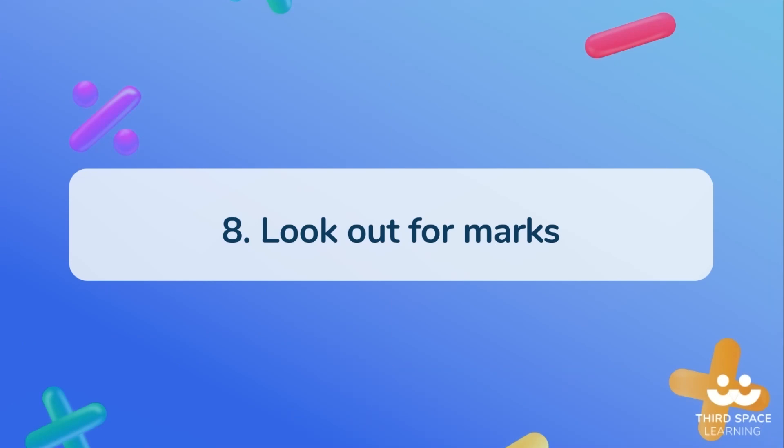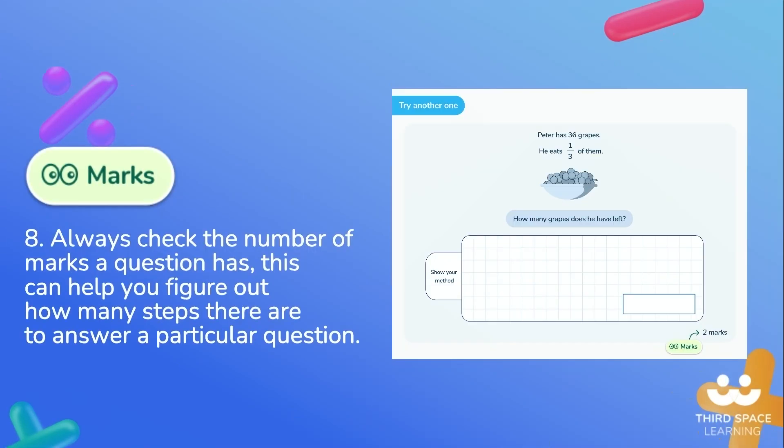Strategy eight: look out for marks. Always check the number of marks a question has. This can help you figure out how many steps there are to answer a particular question.